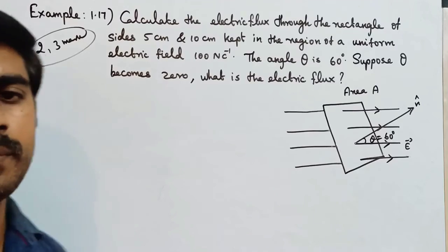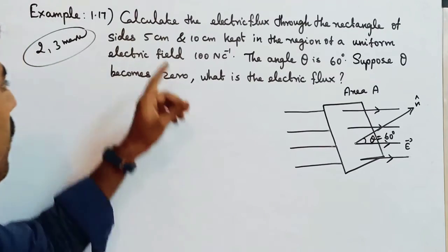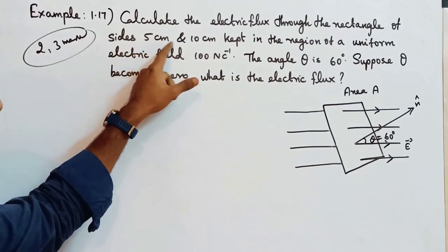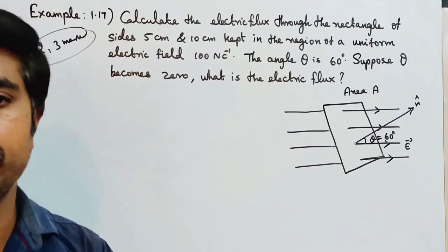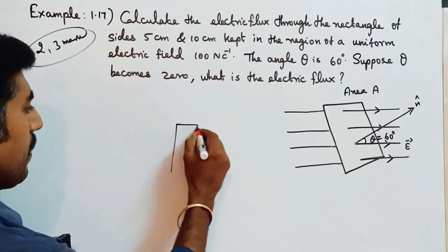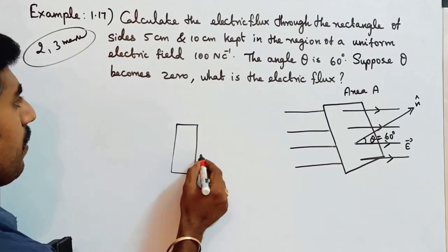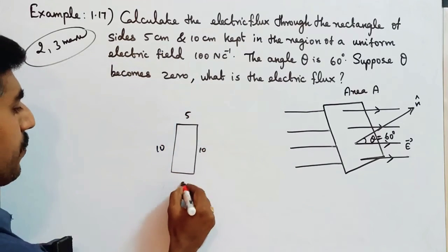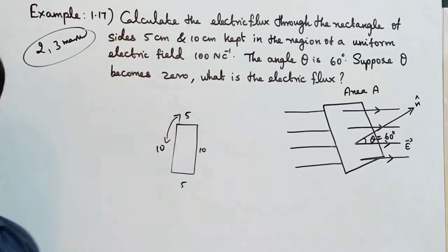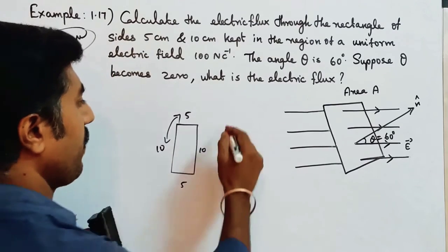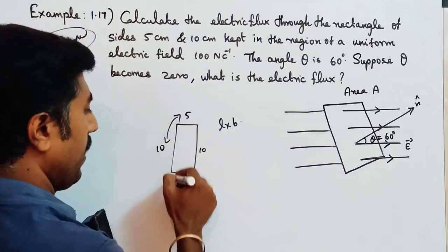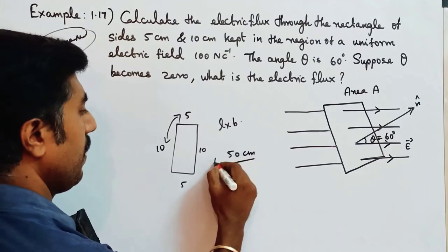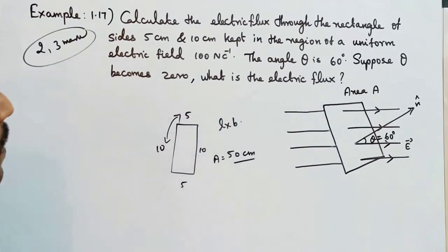This is example 1.17. The question: calculate the electric flux through a rectangle of sides 5 centimeter and 10 centimeter. A rectangle means opposite sides are equal. So one side is 10 centimeter and another side is 5 centimeter. So 10 into 5 - the area of a rectangle is length into breadth, so the area is 50 centimeter squared.